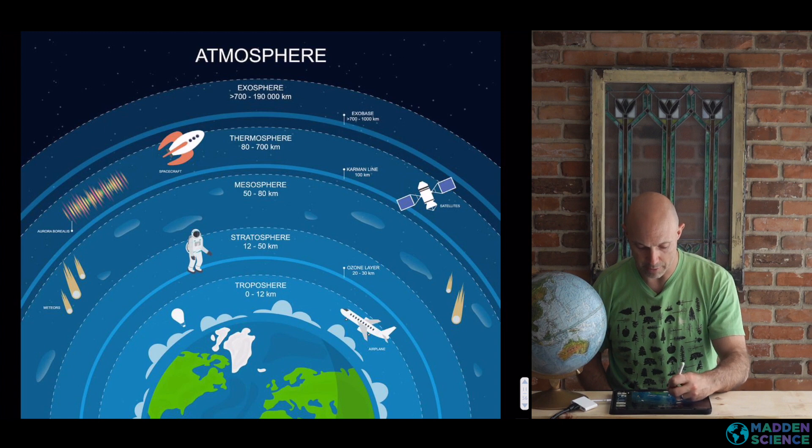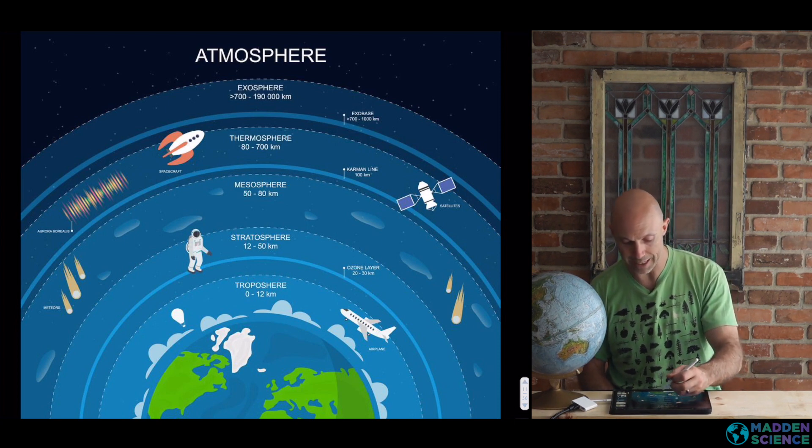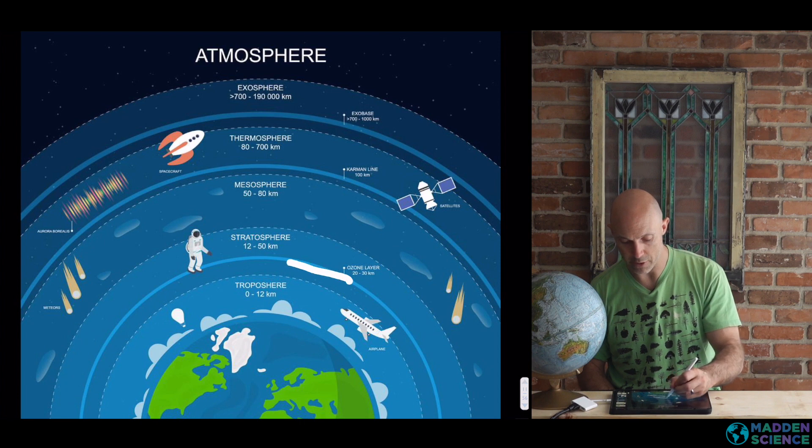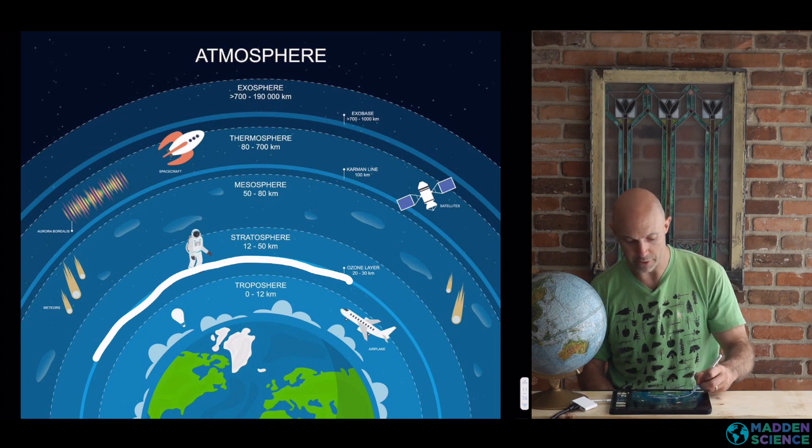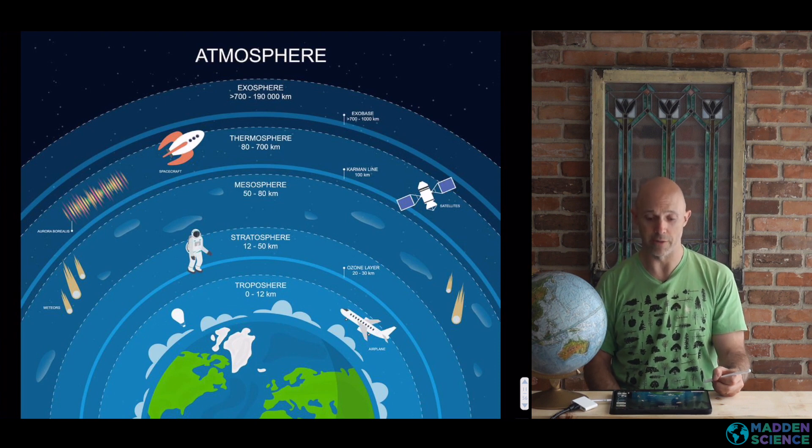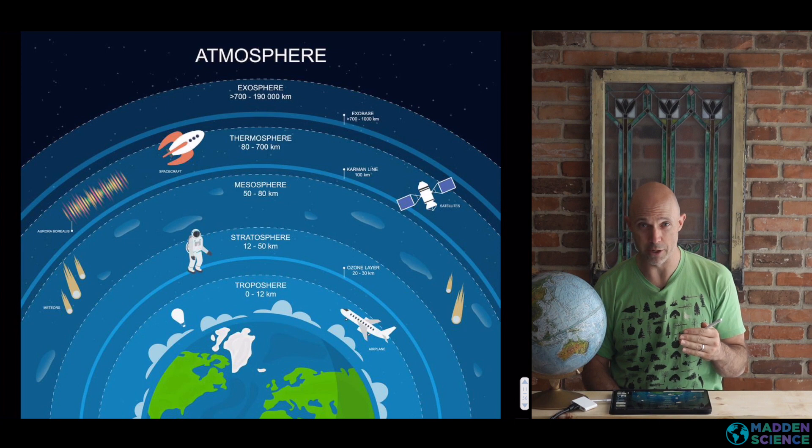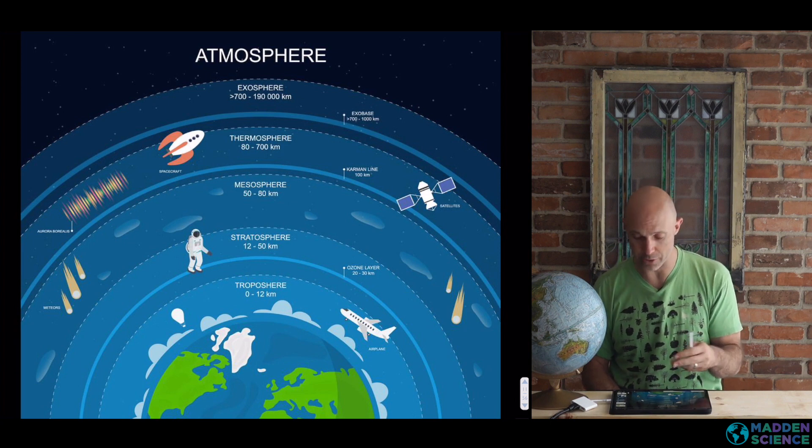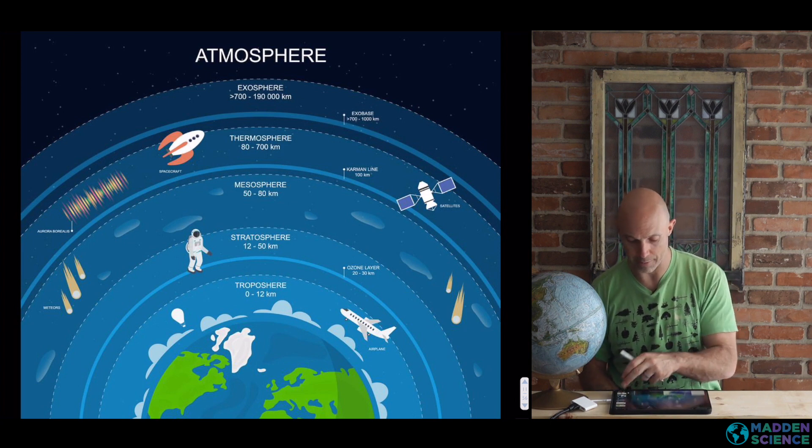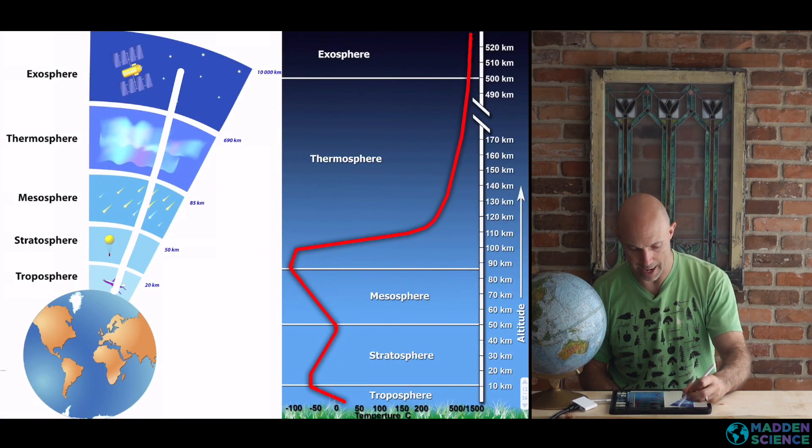First up, you've got troposphere, stratosphere, mesosphere, thermosphere, and exosphere. Note that there's some breaks in between. There's a super important layer within the stratosphere called the ozone layer. So a high concentration of ozone that exists at about 20 to 30 kilometers. We'll see that ozone exists elsewhere. It's just concentrated or at its peak in that layer.